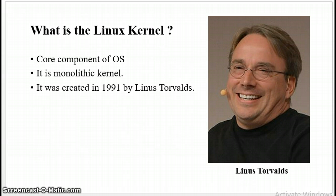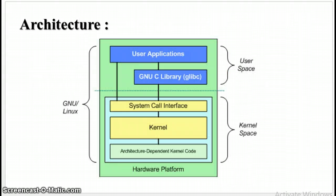Now we can see the architecture of the Linux kernel. This image shows the clear architecture of the Linux kernel. Linux kernel architecture is divided into two layers: user space and the kernel space.